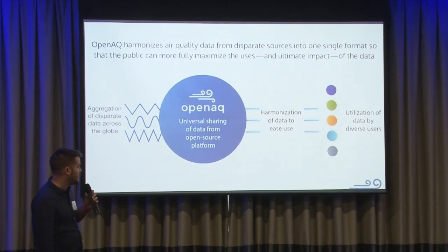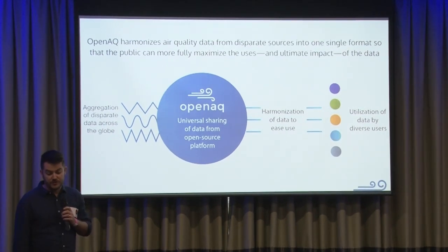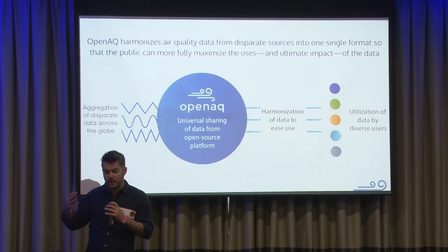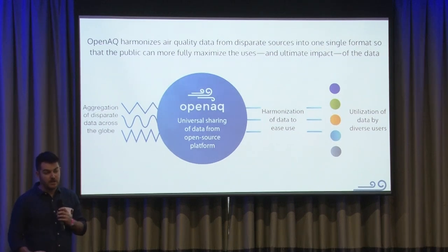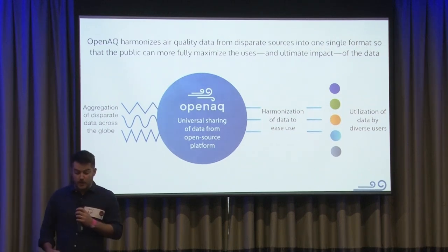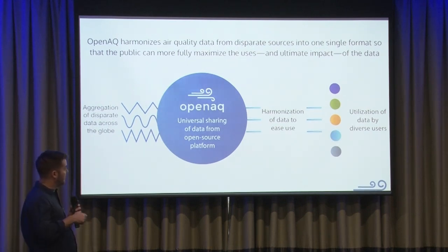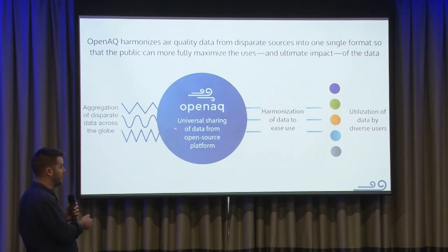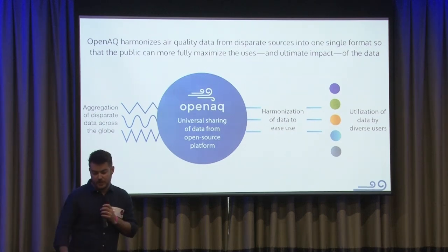At a high level, what we do at OpenAQ is we harmonize data from the world's disparate sources of air quality. We bring that into a single data format and a single data platform so that folks can fully maximize the use of air quality data. We've got this large group of disparate sources, and we've created a universal platform to harmonize the data so that many different use cases can utilize it.